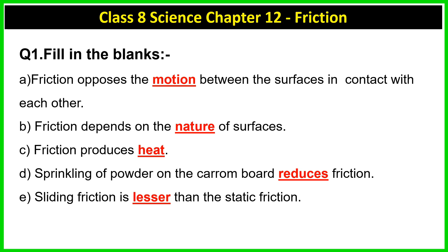Let's see filling the blanks. Question A: Friction opposes the dash between the surfaces in contact with each other. The answer is motion between the surface. Question B: Friction depends on the dash of surface. The answer is nature. As we know, rough surface increases friction and smooth surface decreases friction.